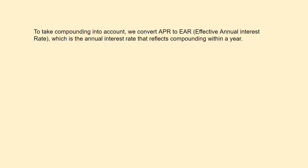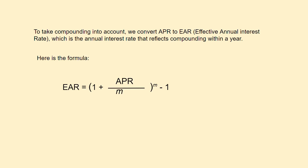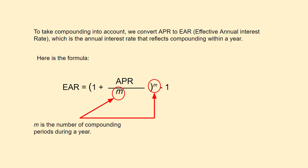To take compounding into account, we convert APR to EAR, or effective annual interest rate, which is the annual interest rate that reflects compounding within a year. Here is the formula. M in this formula is the number of compounding periods during a year.